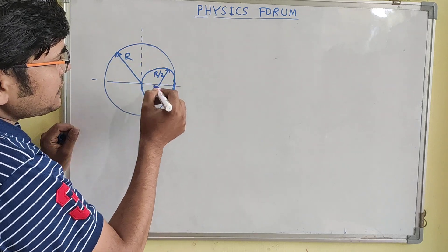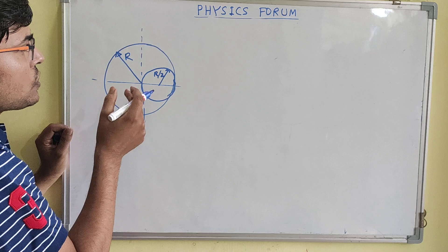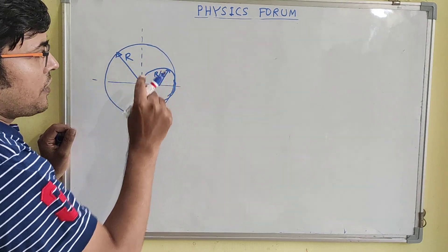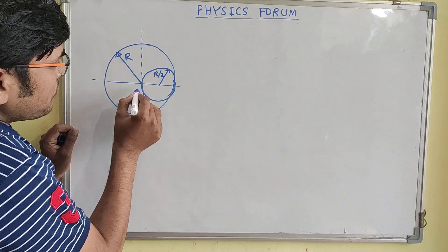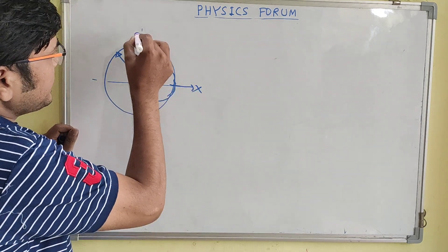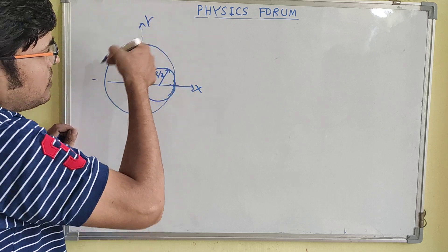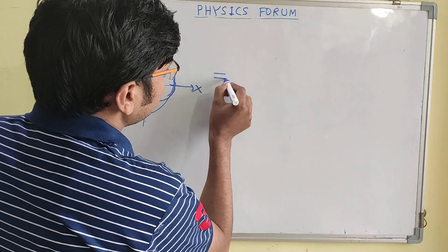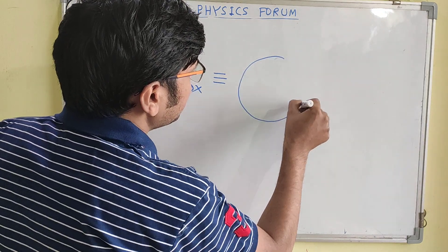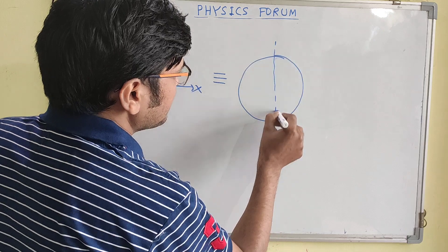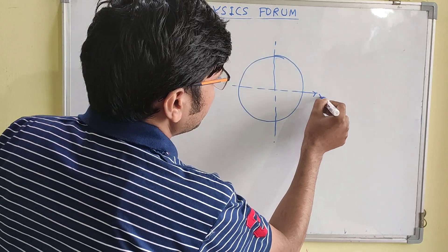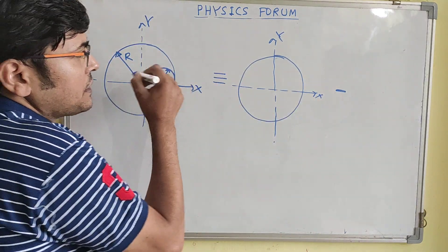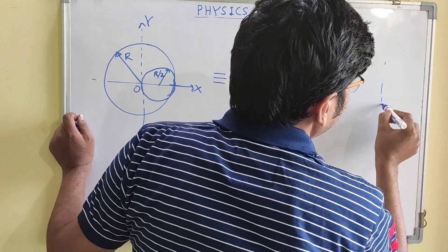So in that case, where will be the center of mass of this remaining disk that is created after removing this part? First we define our axis — this is my x-axis and this is my y-axis. Now this system is equivalent to two systems: this entire disk minus the part which has been taken out from it.